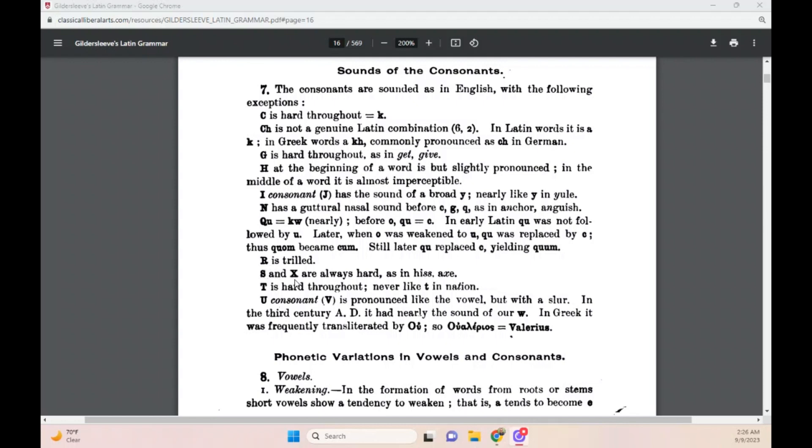Next, the letter S and the double consonant X are always hard. They always make that hard sound. S always makes the S sound in hiss. It doesn't make the sound like in measure or tissue. It doesn't make those softer sounds. It's always hard, sibilant. And the consonant X, the double consonant, is the same way. It's always like X in axe. Always hard. Not softened, not voiced. So we know in English we have the X as in xylophone, where it's voiced. The classical Latin X is never voiced like that. It's always hard, like K-S.